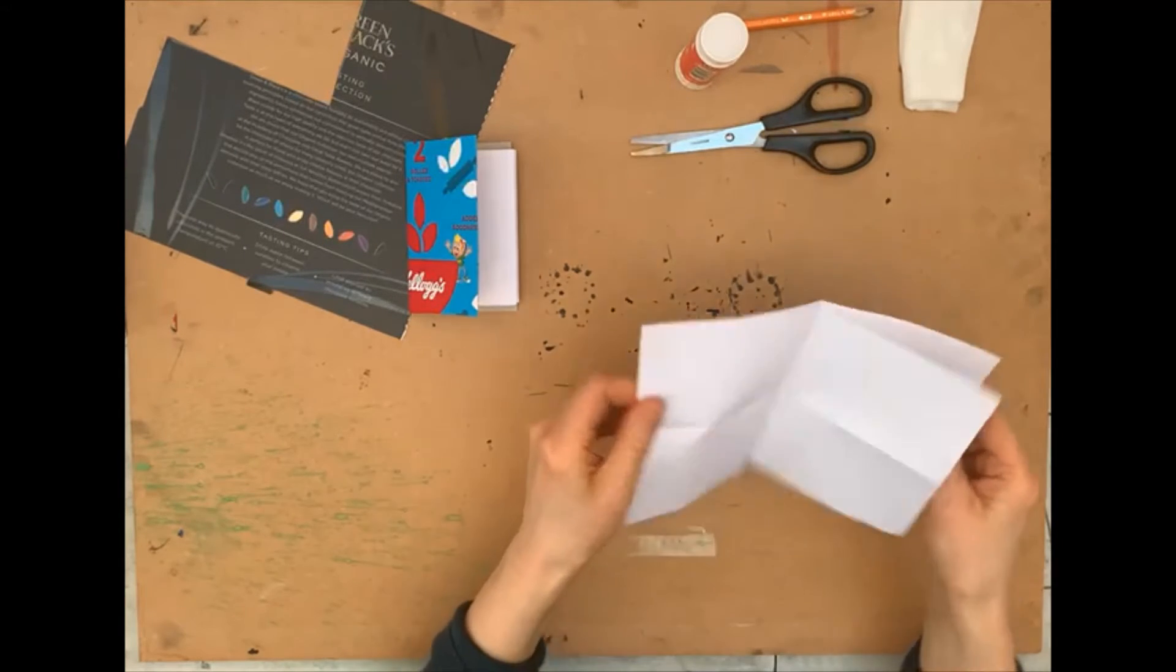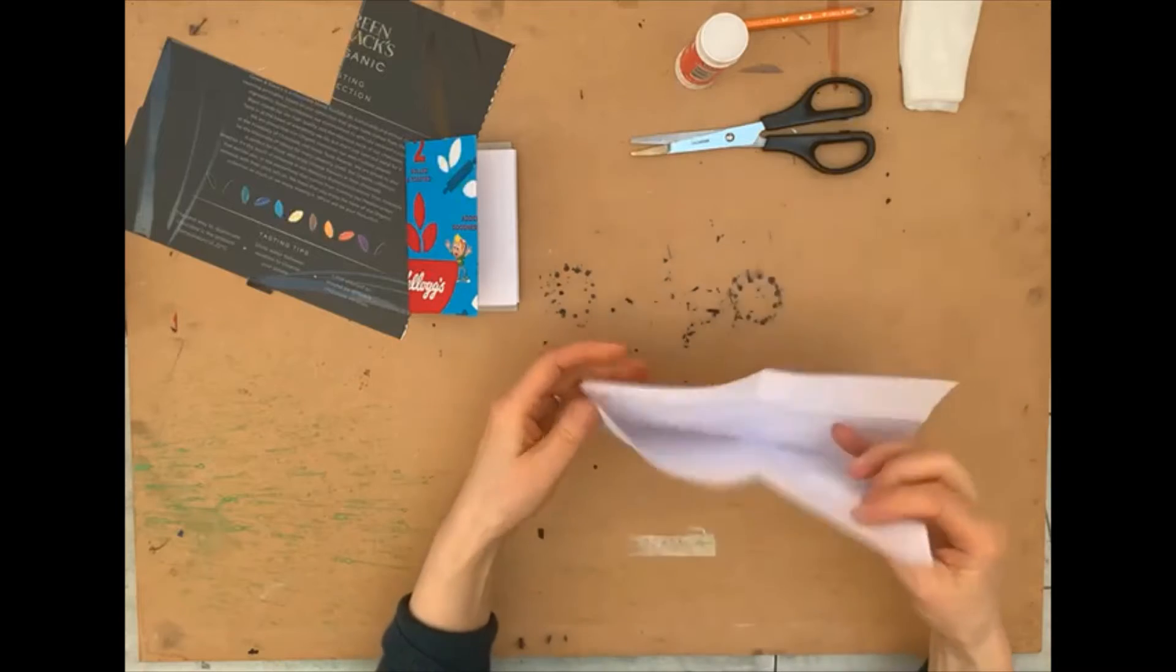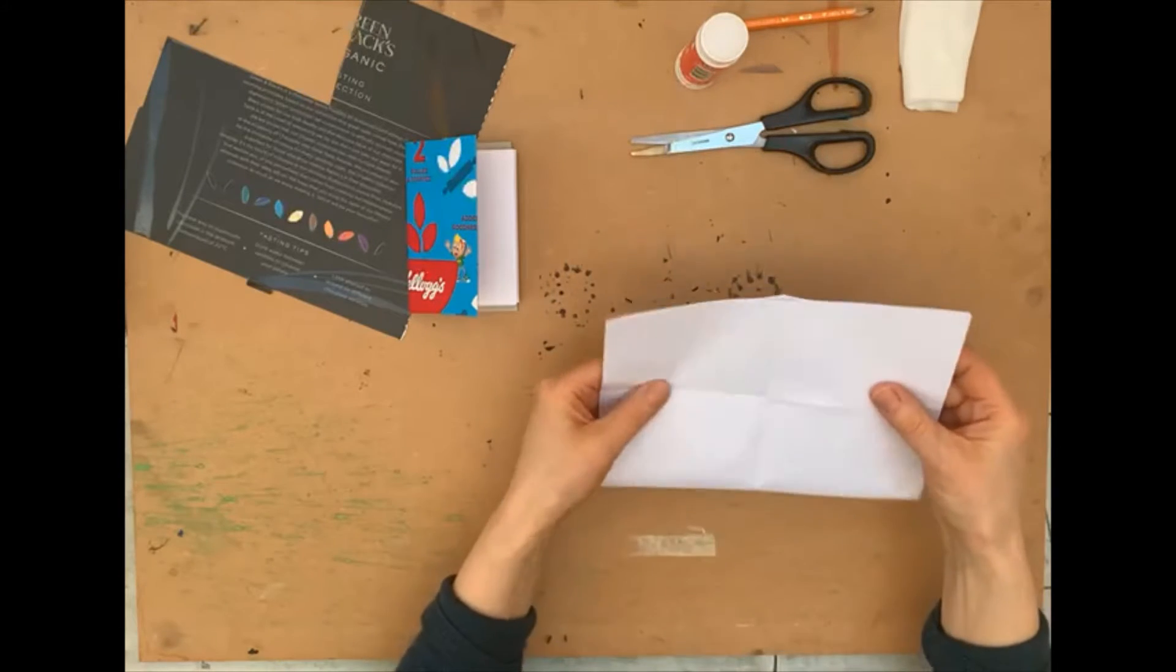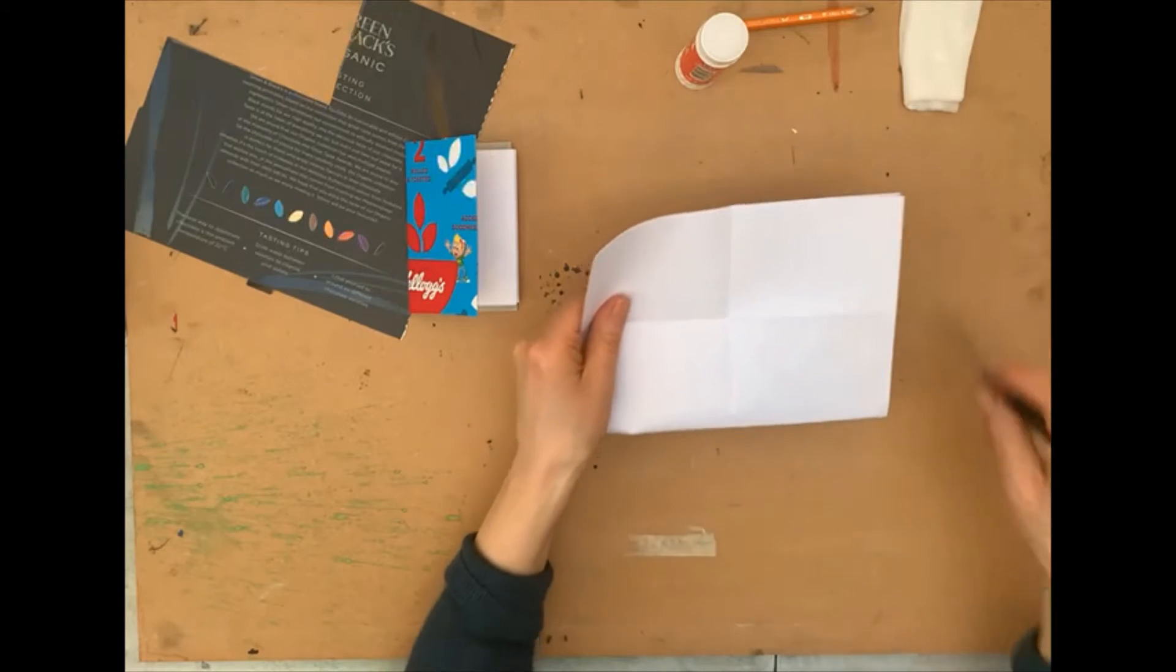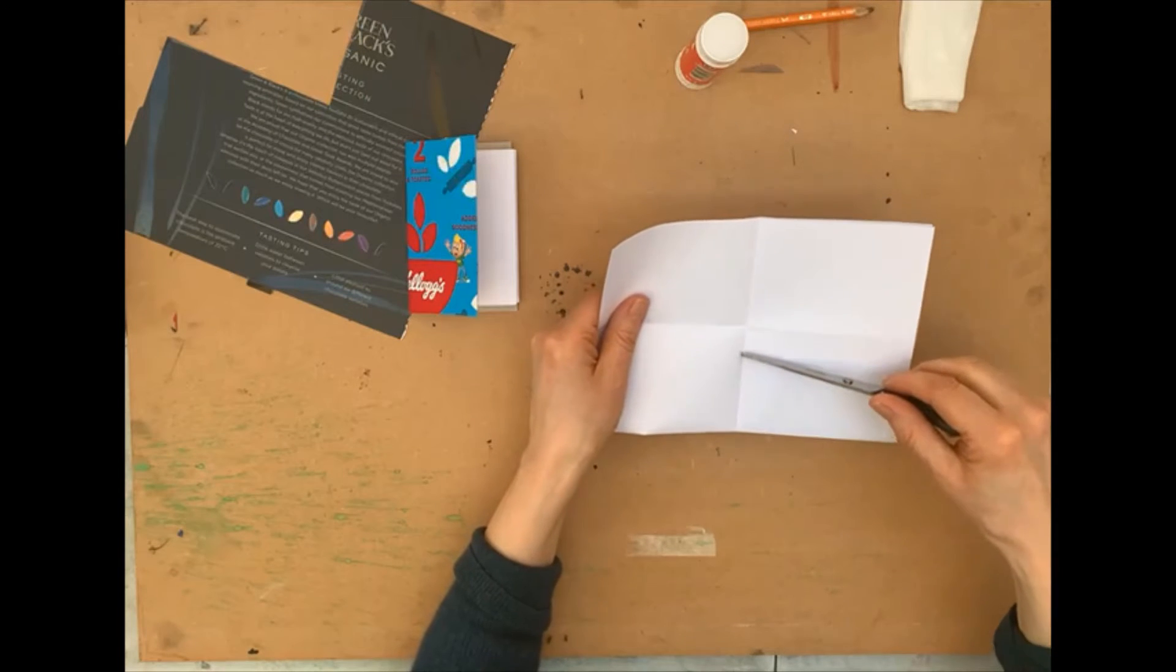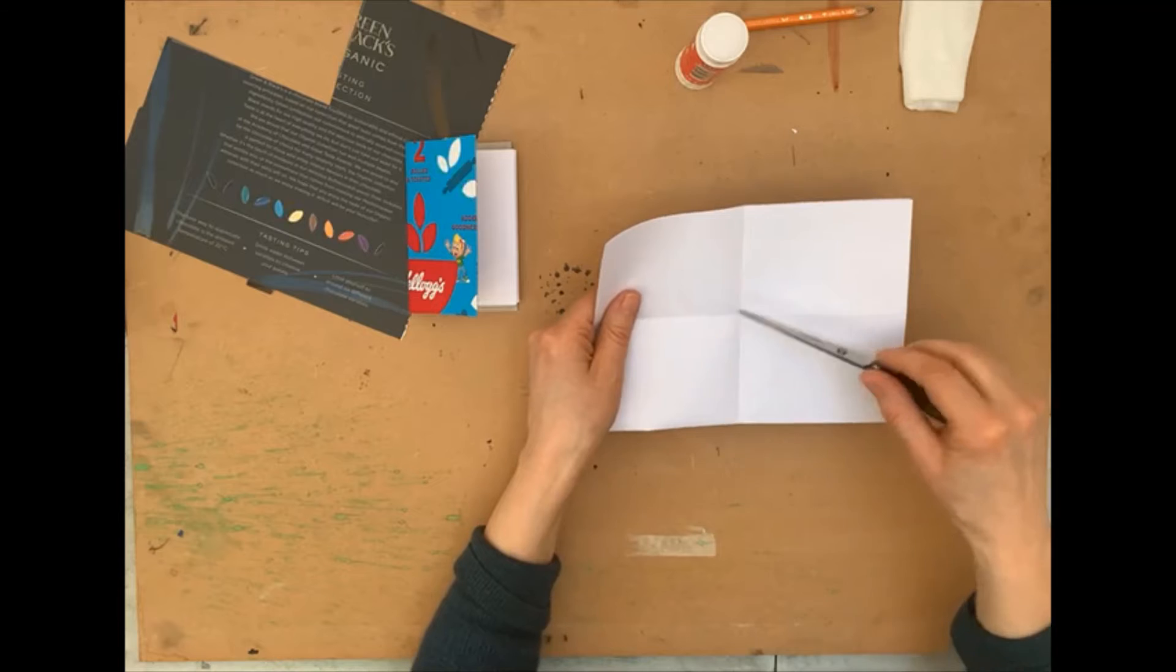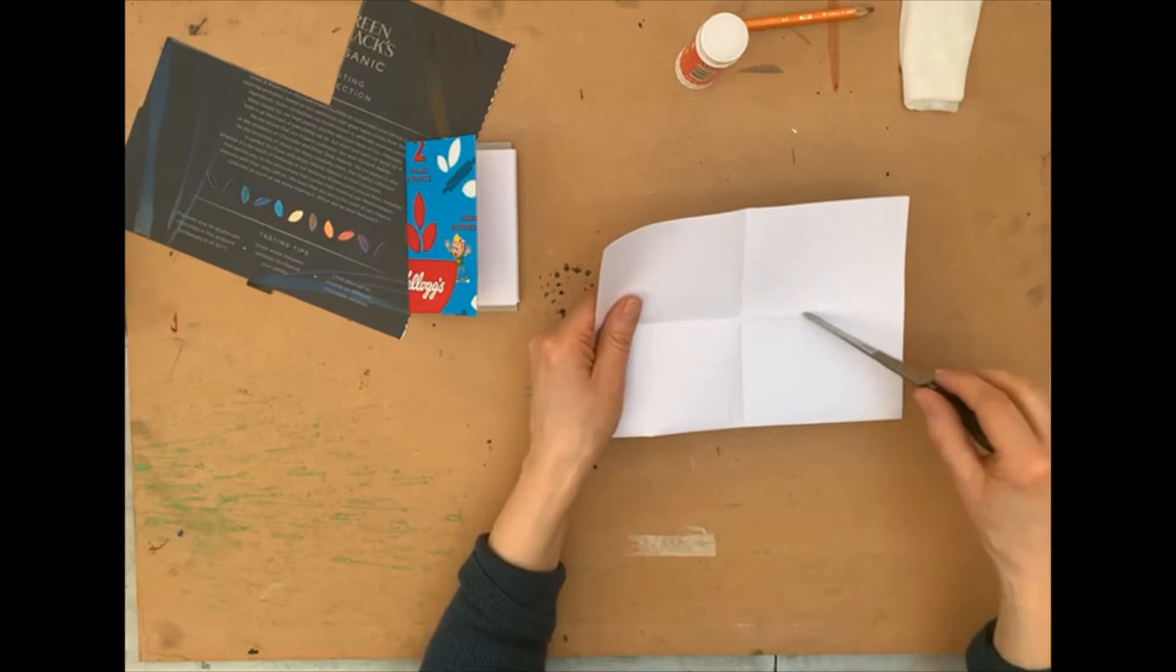Now you open up your page. So once you have it folded this way, you get your scissors and you're going to cut it up to the center section where this vertical line meets the horizontal line.